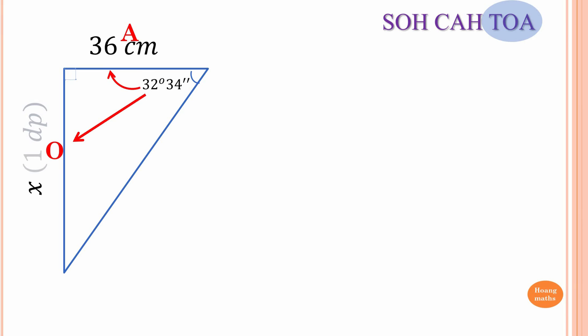T is for tangent. tan of 32°34' equals O over A. O is x, A is 36, so tan(32°34') = x/36.